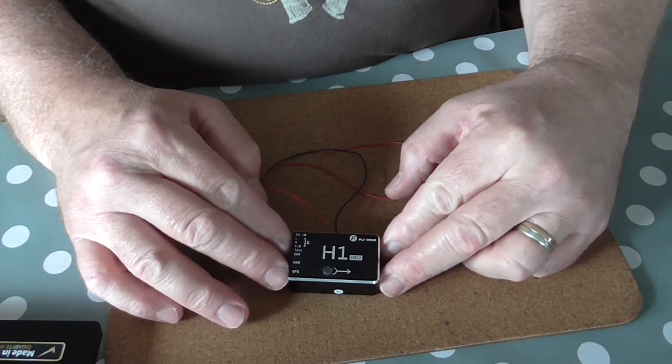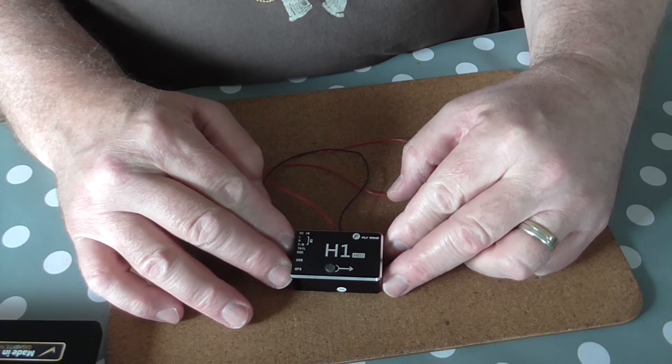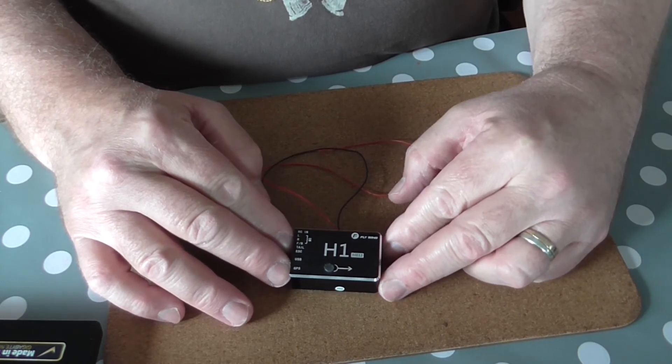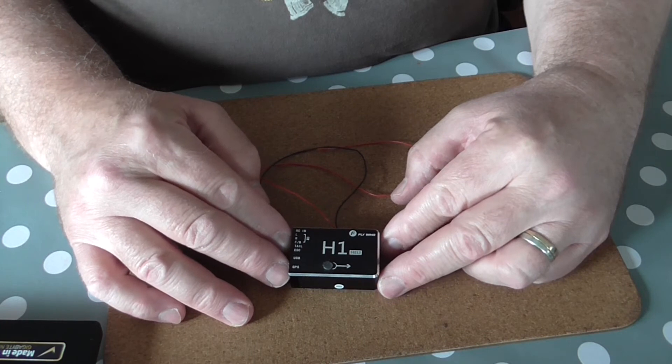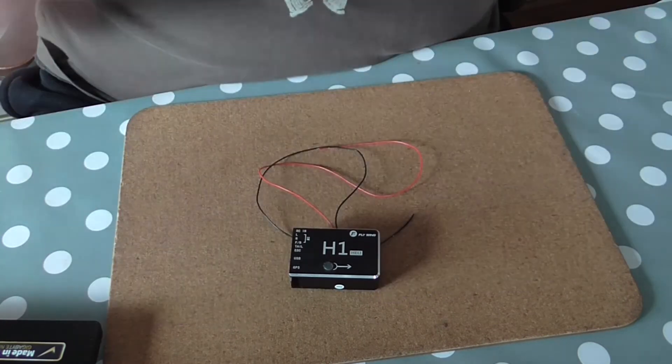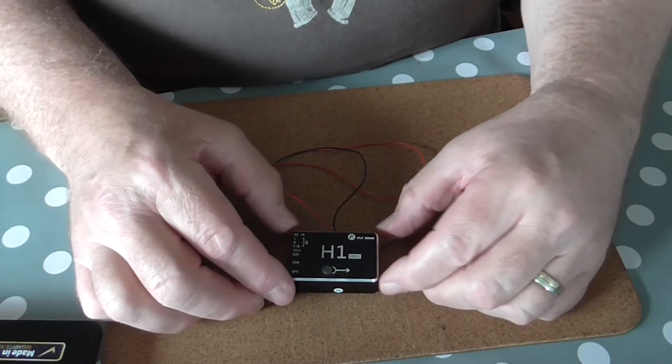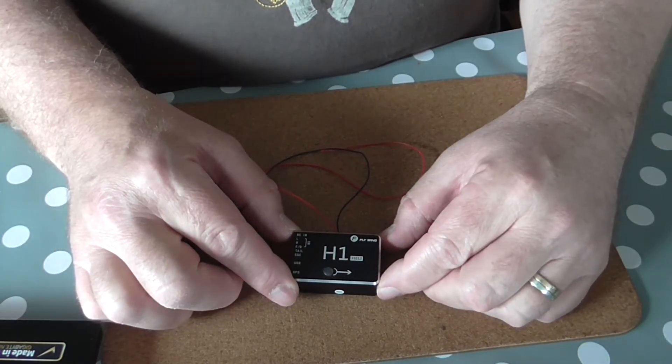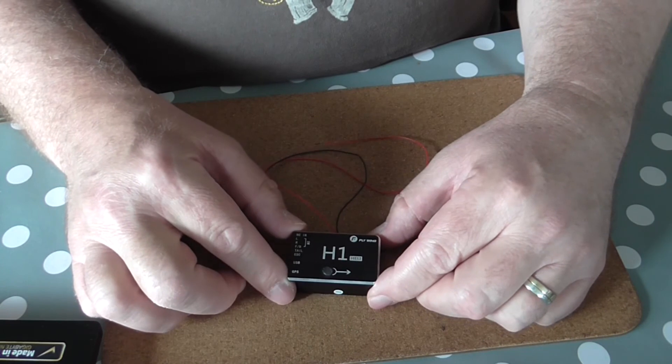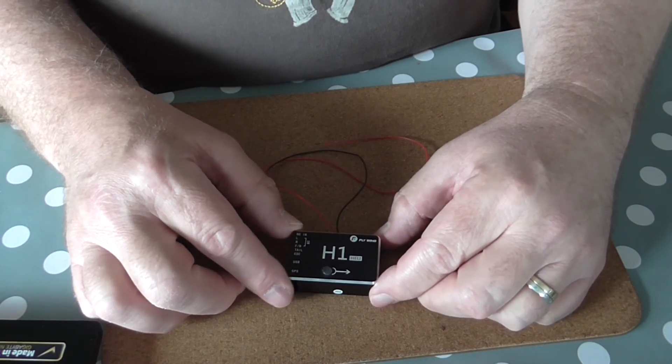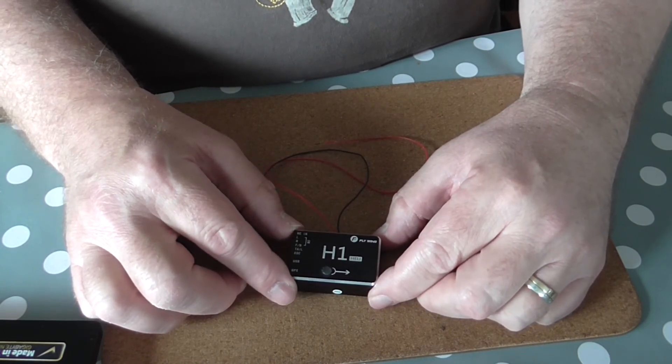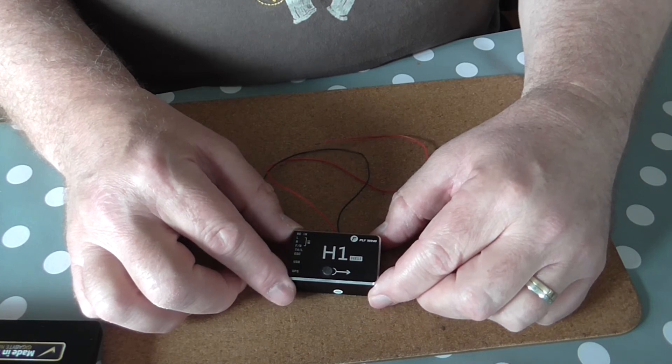And then it also has a programmable thing. So you can flick a switch and it goes inverted, but it's still in full GPS lock. So you can go inverted at any height and it will stay there like a drone but upside down. So pretty cool.